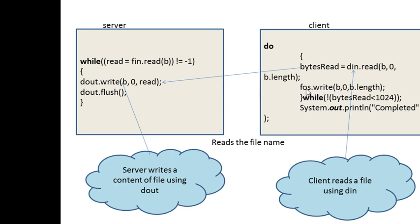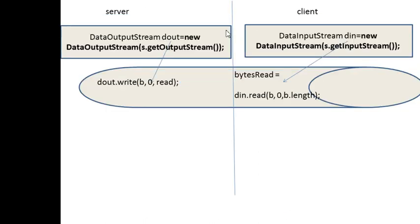Whatever is read from the buffer is written to a file using FileOutputStream. We specify the file to be written in fos, the FileOutputStream. This is an example of how we use dout and din. DataOutputStream — dout is the reference created; DataInputStream — din is the reference created. Using dout, it writes content into a buffer, and then it is read using din.